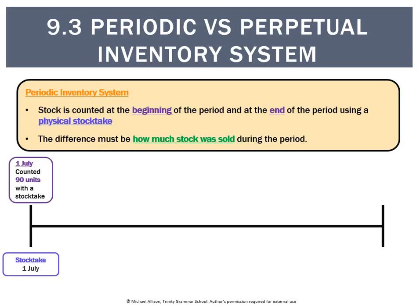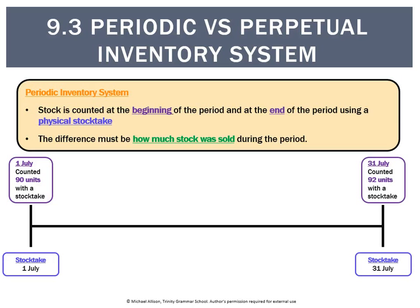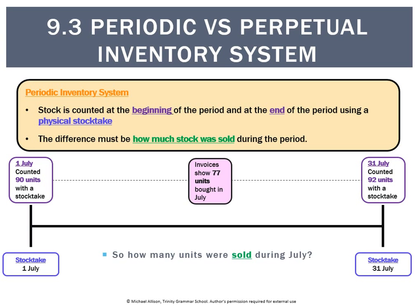Let's take an example. Say we're doing this for July. On the 1st of July we do a stock take and count 90 units. At the end of the period on July 31st we shut the store and do another stock take — that's 92 units, so we've gained two. We also need to factor in how many we bought: we bought 77 units during the period, and that helps us figure out how many we sold.